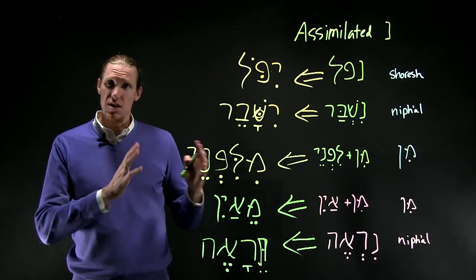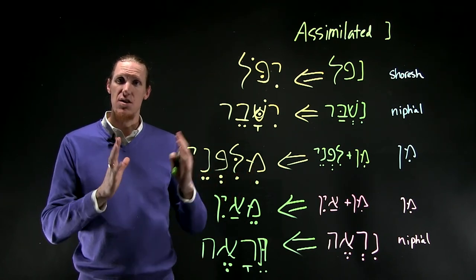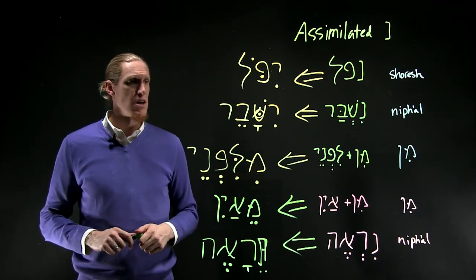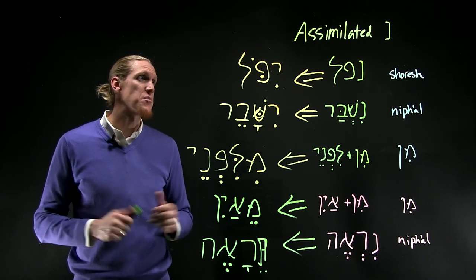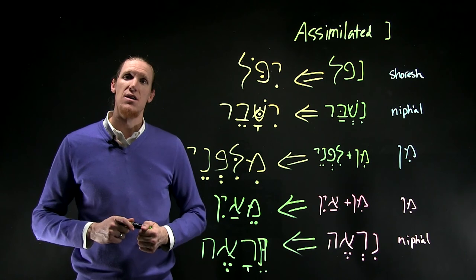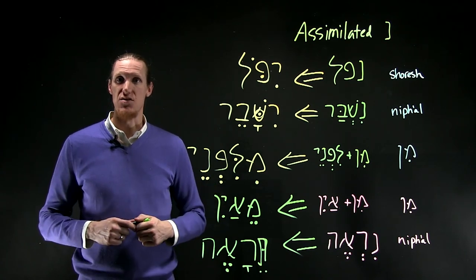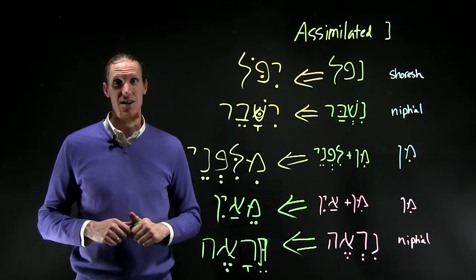This is one of the common missing letter clues that's in the textbook and something to keep in mind, the traces that the noon leaves when it disappears. Lech l'shalom.